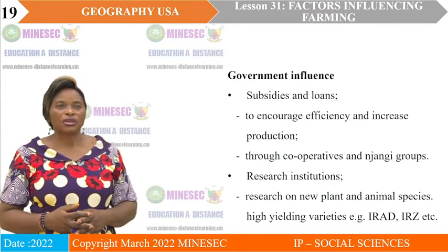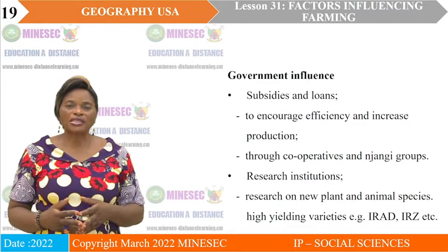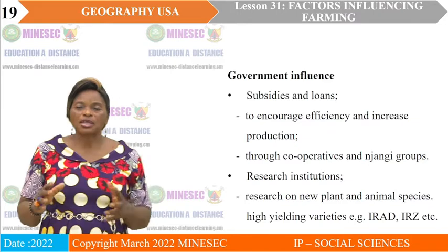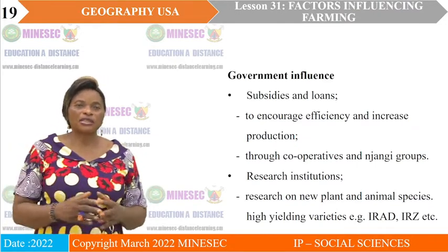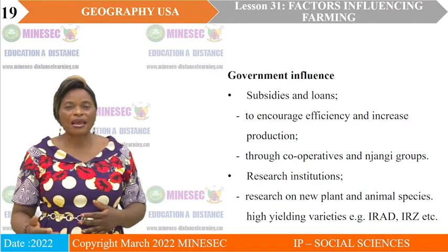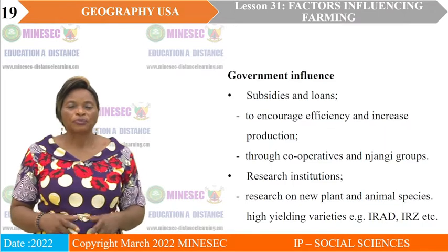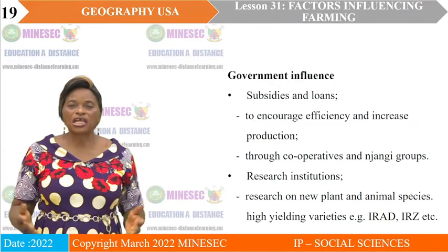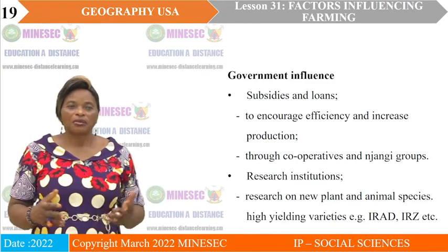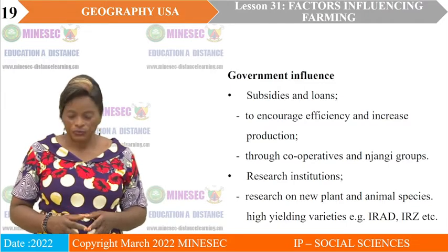Government influence is also very important. Government provides subsidies and loans to farmers at lower rates to enable them to carry on with their activities. Through cooperatives, government helps farmers get subsidies and farm inputs at lower prices in bulk, or sell their products with higher bargaining power as a large group. Government has also provided research institutions conducting research on new plant and animal species, high-yielding varieties, and quick-maturing species — such as IRAD in Cameroon for crop production and IRZ for animal research.